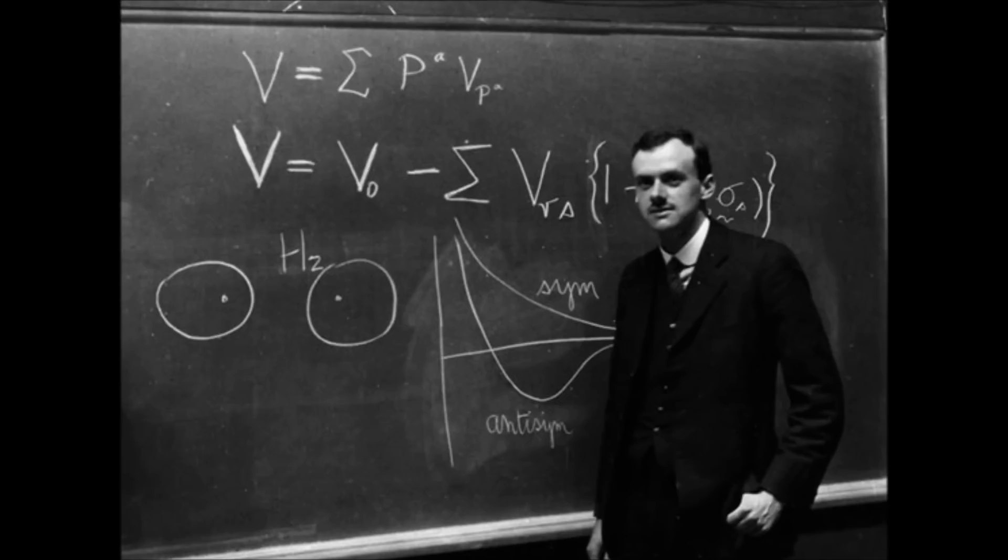An example of a dimensionless number provided by nature is the ratio of the mass of the proton to the mass of the electron. It doesn't matter whether you measure your mass in pounds or grams. You always get the same ratio.